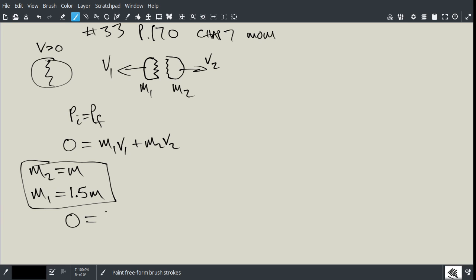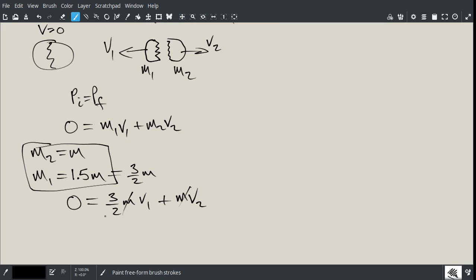So we can say zero equals, and I'm going to rewrite 1.5 as 3 over 2 just because it's much more convenient. I don't like working with the decimal in this case because we're going to do some math. So for M1, I would go 3 over 2 M V1 plus M2 is just M V2. Now what I can do is I can divide the whole equation by M. The M's cancel out. And now I can solve for V2. So if I go negative 3 over 2 V1, that's going to equal V2. That's as far as I can take this now. I can't go any further here with momentum.